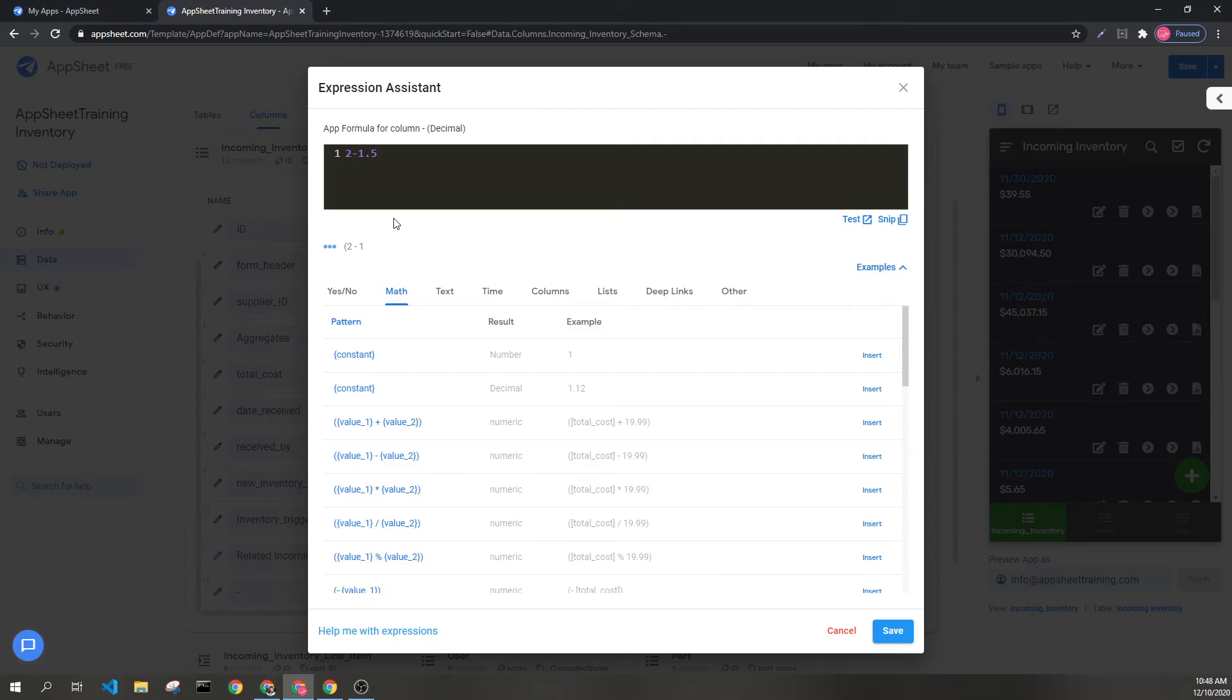Alternatively, if I put this, we would have 0.5 as the answer, which is a decimal. If I tried to put this into a number type, AppSheet could return an error.